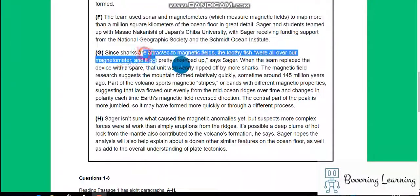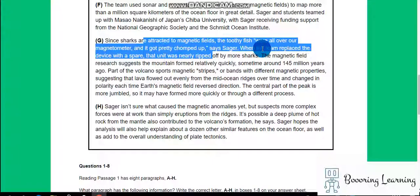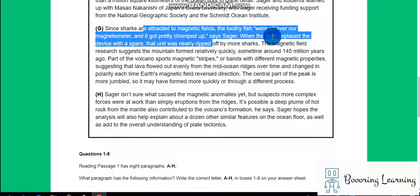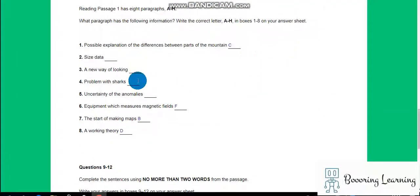Since sharks are attracted to magnetic fields, the toothy fish were all over the magnetometer. It got pretty chewed up. When the team replaced the device with a spare that unit was really ripped off by more sharks. G, problem with sharks.